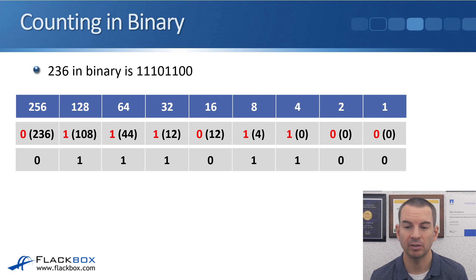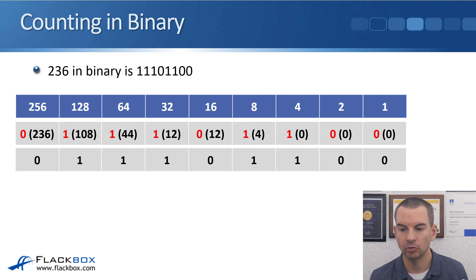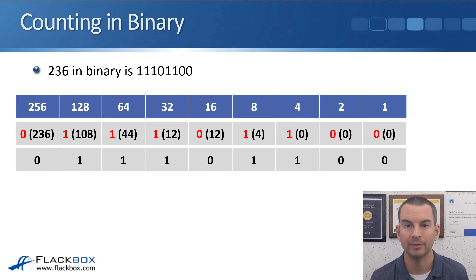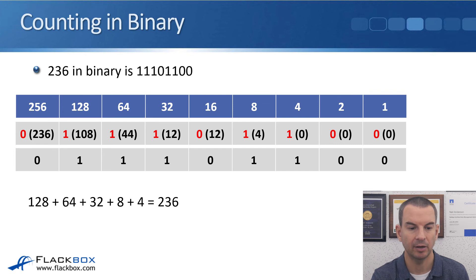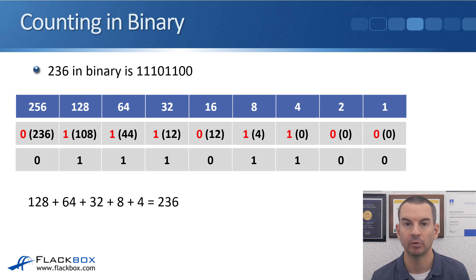As a final check, you should always have 0 left over. If you get down to the 1 column and you've still got digits left over, you've made a mistake and should go back and redo it. You can also verify your answer by adding up all the columns where you've got a 1. In our example, we've got a 1 in the 128, 64, 32, 8, and 4 columns. Adding 128 + 64 + 32 + 8 + 4 equals 236 — the number we were looking for.